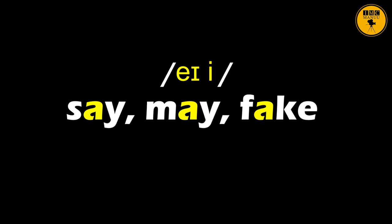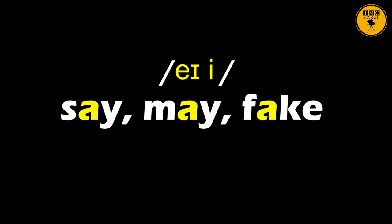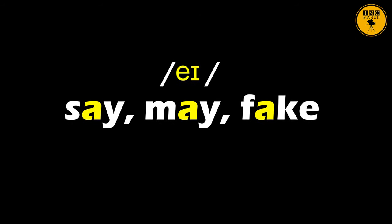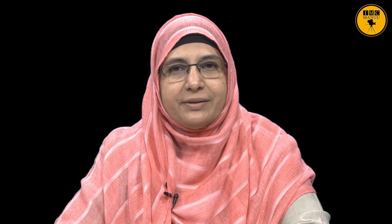I will read the example sets on your screen — as I read you will see the symbol for the particular diphthong. Say, may, fake. If you notice, you find a gliding movement of the tongue — it is not stationary. It moves from uttering one sound and quickly moves on to the other. So there is a gliding movement. Repeat: say, may, fake.